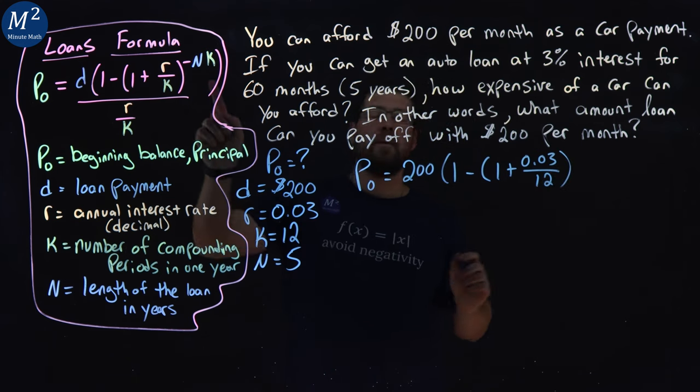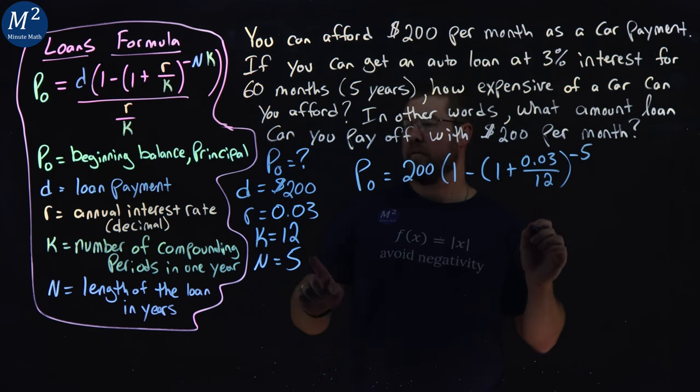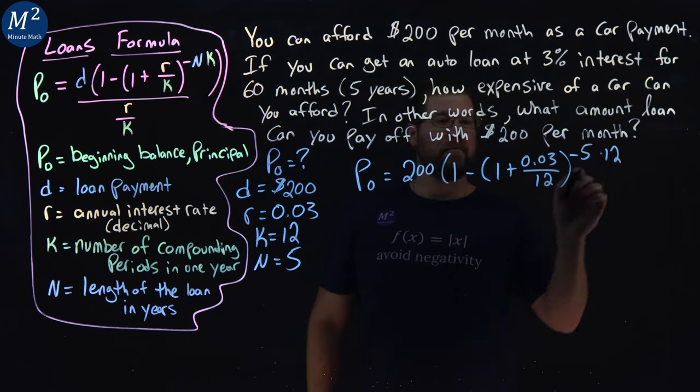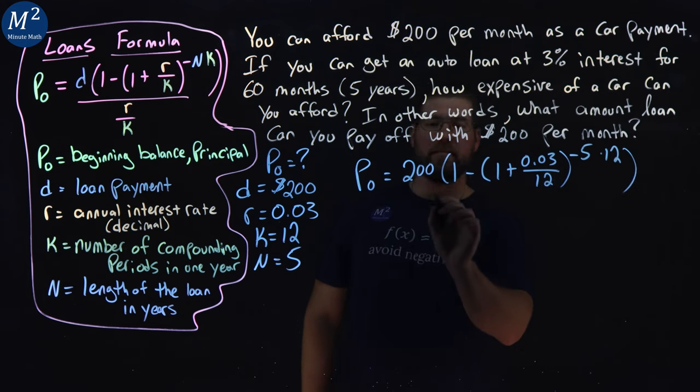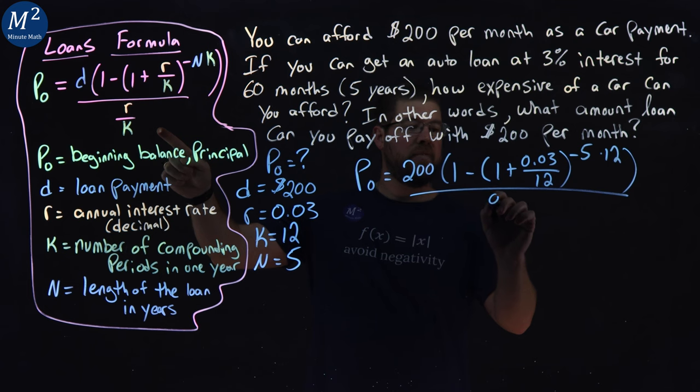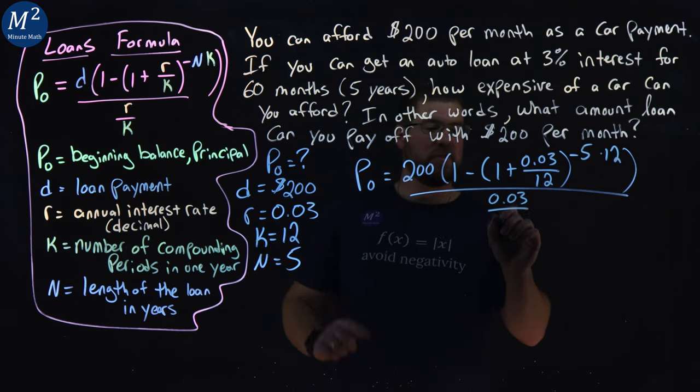And we're raising it to a negative N value, which is five times K, which is 12. And we're closing that parentheses out. And that's going to be all over R over K, 0.03 over our K value which is 12.